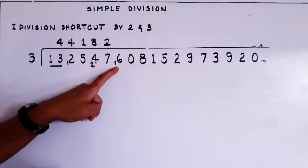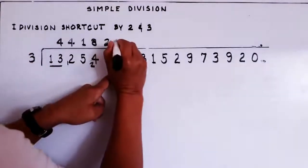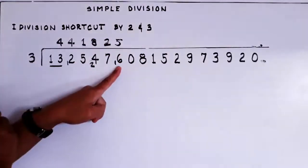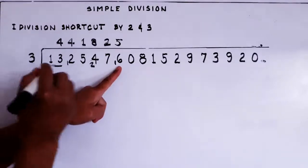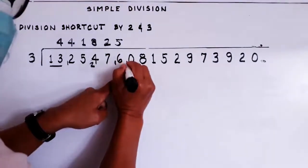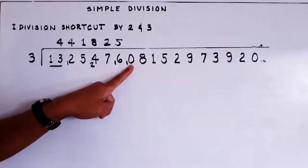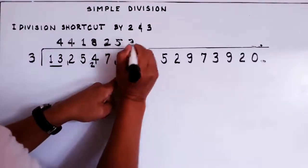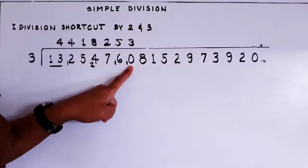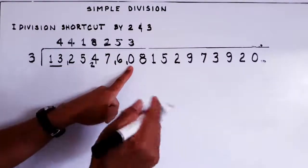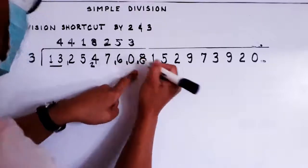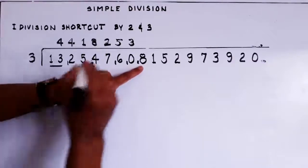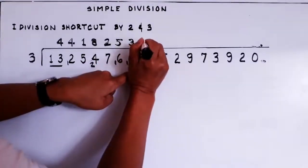Divide 16 by 3 — not 6, it's 16 — we get 5. That is 15. Count from 15 to 16 — remainder is 1. Put the 1 next to the zero, so zero becomes 10. Divide 10 by 3 — we get 3, because 3 times 3 is 9. Count from 9 to 10 — remainder is 1. Put that 1 next to the 8, so 8 becomes 18. Divide 18 by 3 — exactly 6.